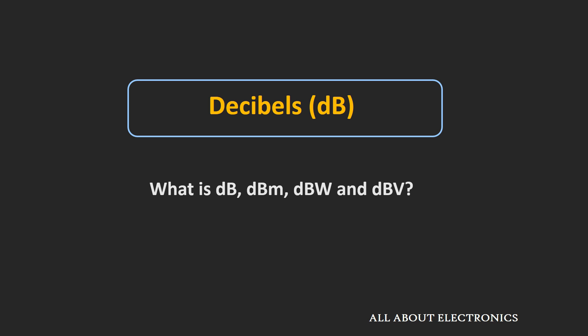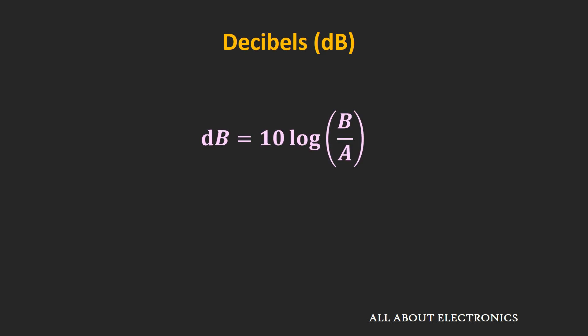Let us clear all this confusion. The decibel scale is basically a logarithmic scale which defines the ratio of two quantities. In electronics, it is used to represent the voltage or power gain of a particular amplifier or electronic system. In communication systems, it is used to represent the attenuation provided by a particular channel, and also to represent voltage and power.